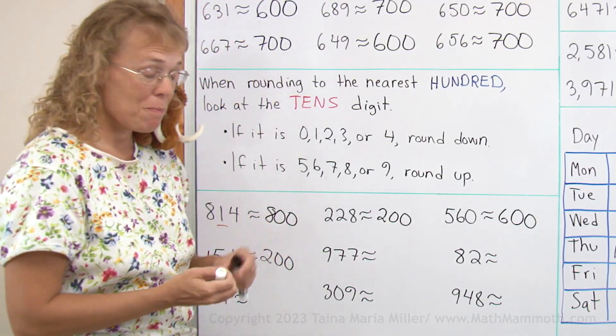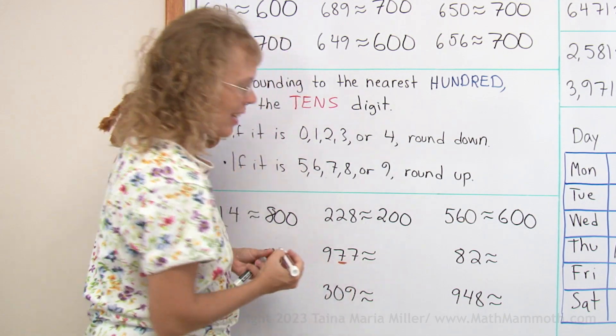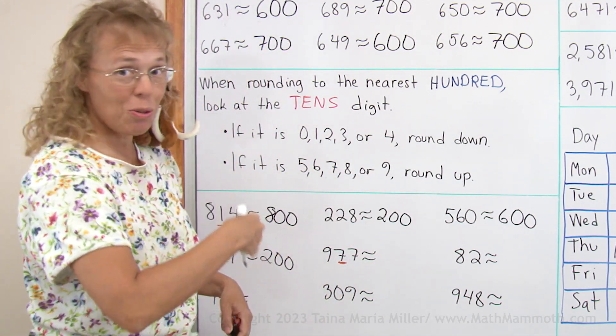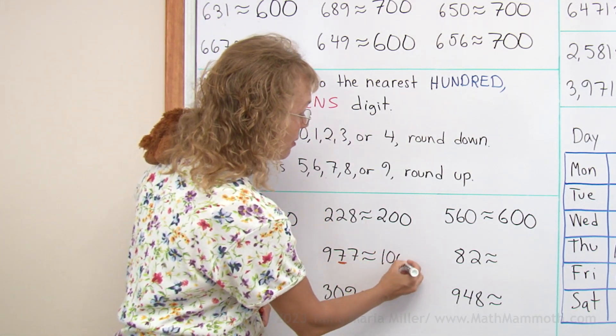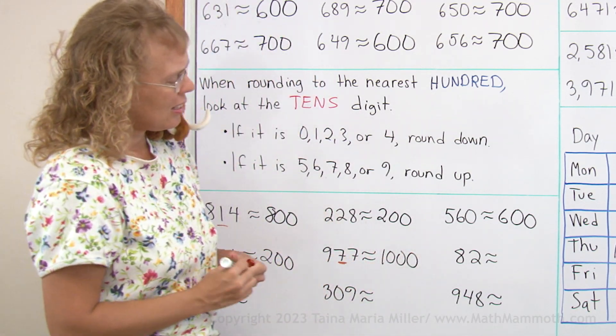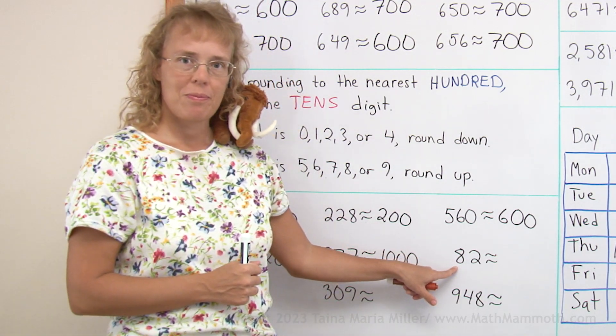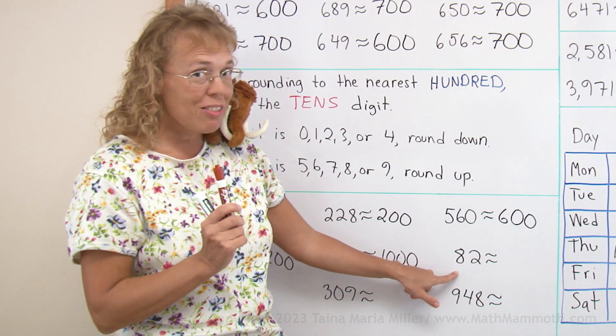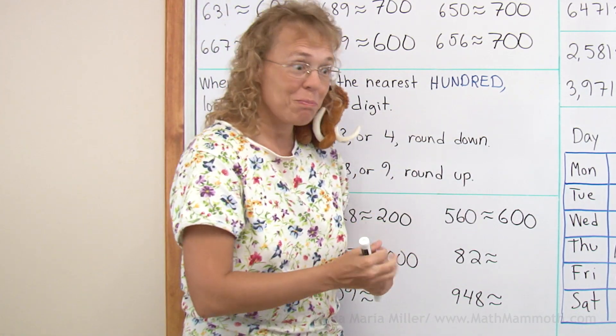977. There's 7 tens. It means we round up. And the next whole hundred is, in this case, a thousand. How about 82? It is 8 tens. So we round up. And the next whole hundred is 100.